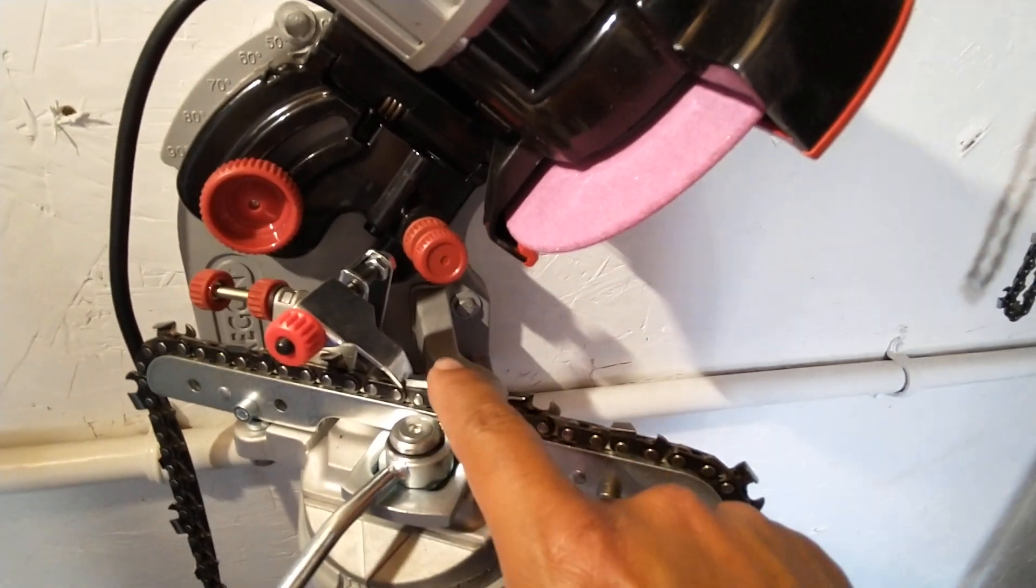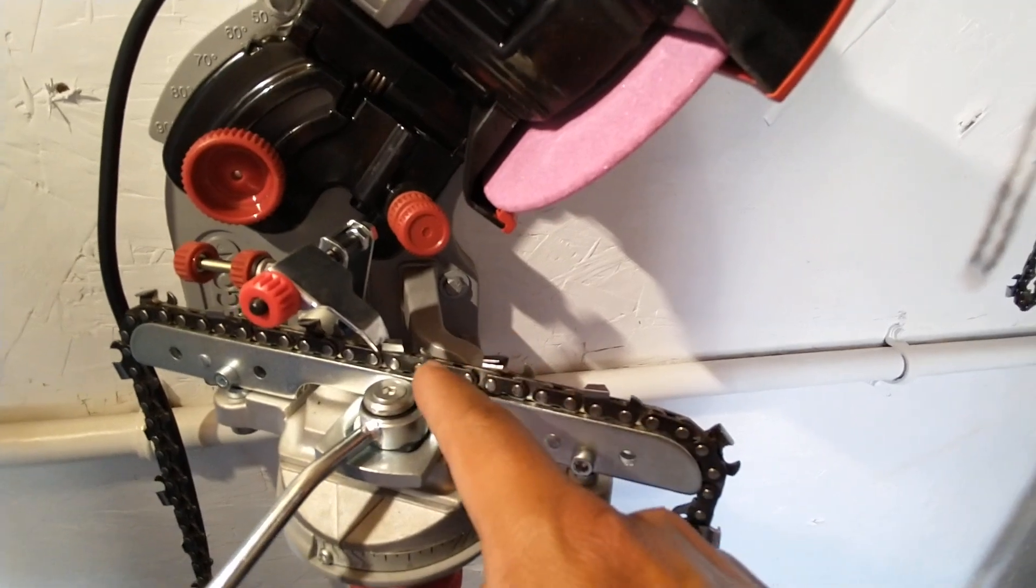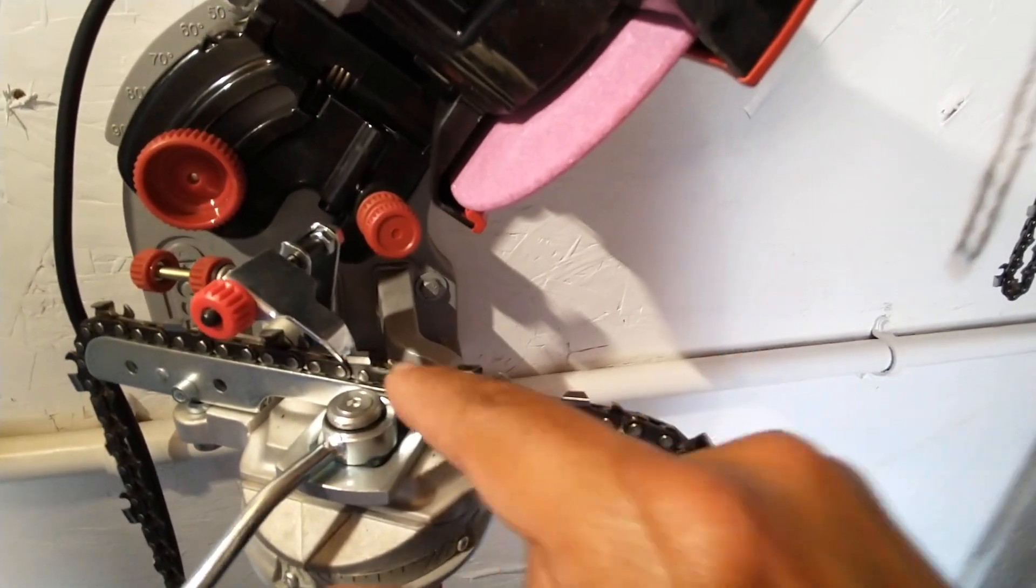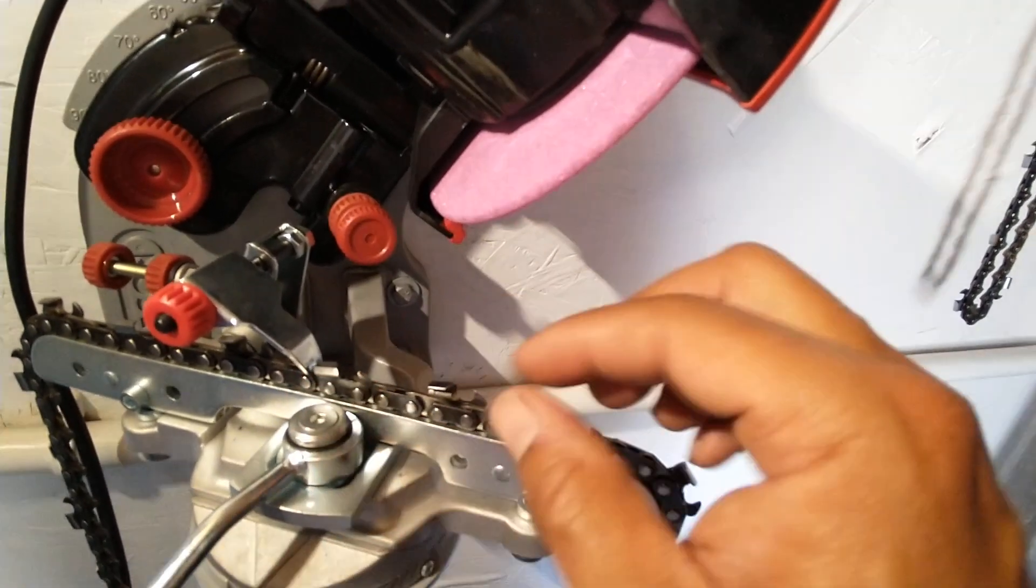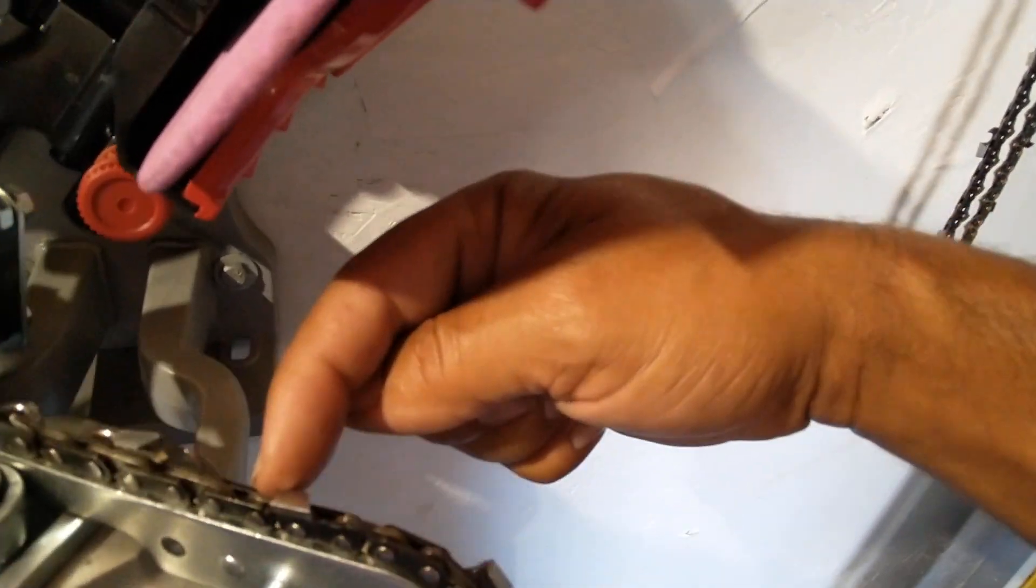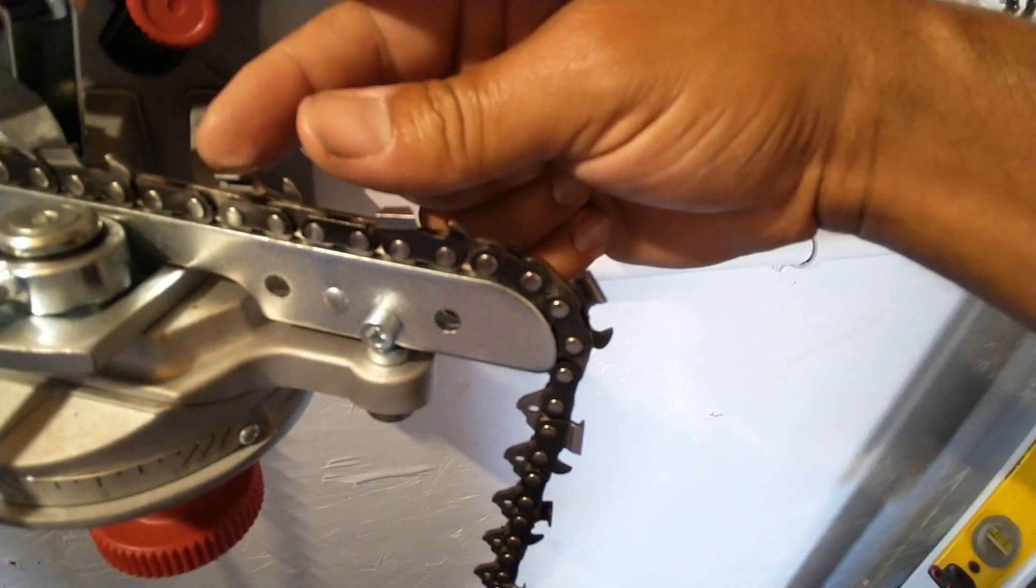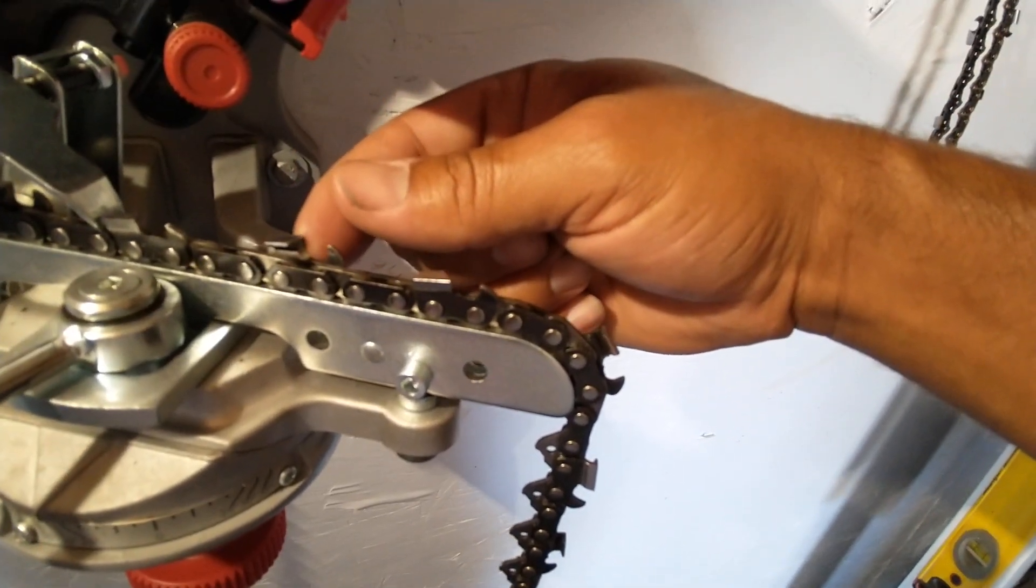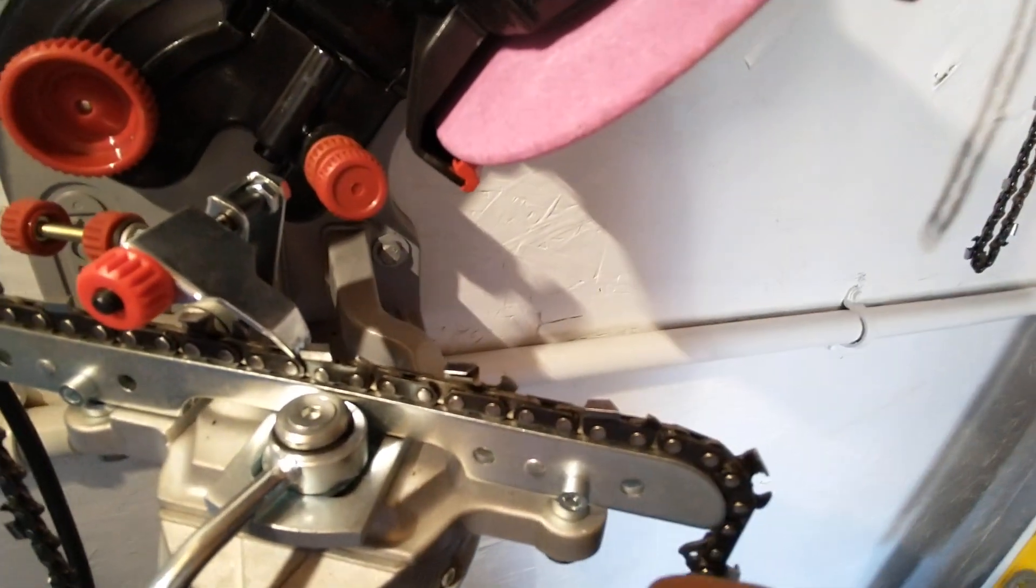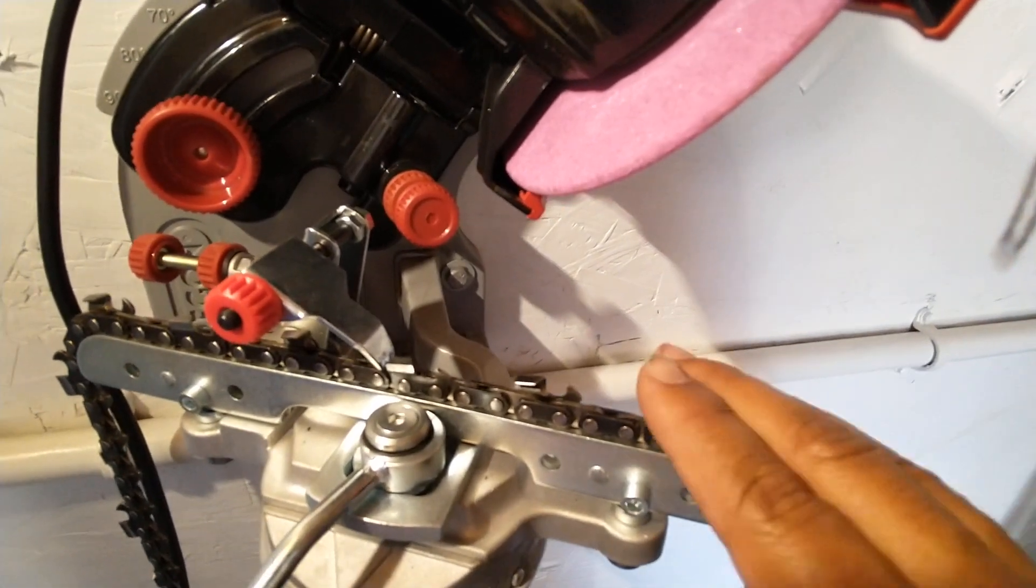The problem when you use a file is that eventually, unless you're filing everything exactly the same each pass, your cutting tooth width - this width right here from this end to that end on the tooth - eventually one's going to be a little shorter or longer than the other. Your gullet's going to be off a little bit. They're going to have minor inconsistencies that start building up over time, and then your chainsaw is going to be completely out of tune.